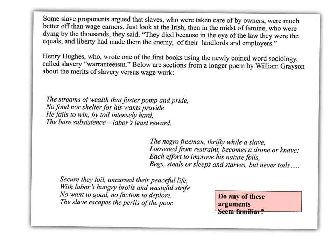Another interesting argument we often overlook: slave owners argued not just that slaves were well taken care of, but that as an economic model, this kind of feudalism was better than the harsh capitalism they saw emerging. They looked at the Irish, who were starting to die amid the potato famine, and essentially argued that slaves — because they received housing, food, and other amenities — were better off than wage earners who just got a little bit of money. And at the time, wage earners were indeed not very well off.